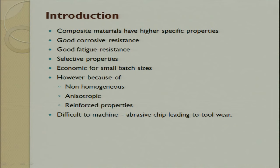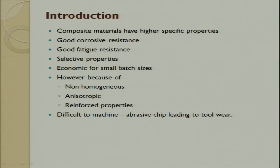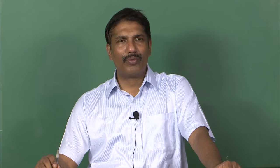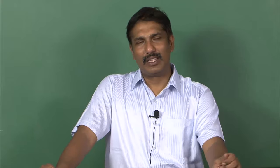When classifying machining processes, we divide them into contact machining and non-contact machining. In contact machining, a tool comes in contact with the work piece; the tool must be harder than the work piece. A geometry is given to the tool which has relative motion with the work piece to create any feature. Examples include drilling, milling, turning, boring, and grinding.